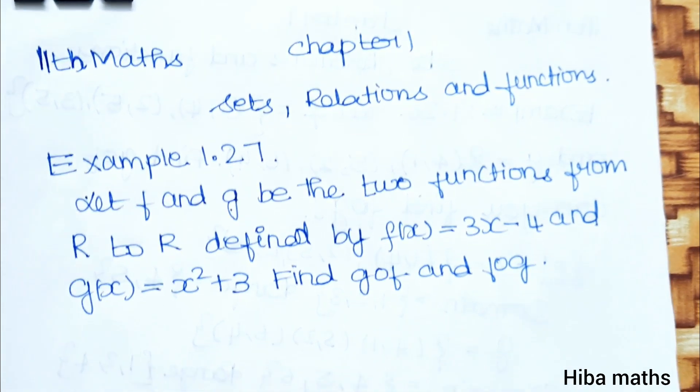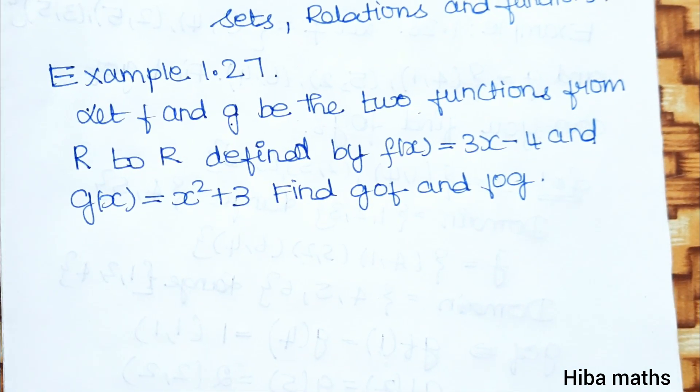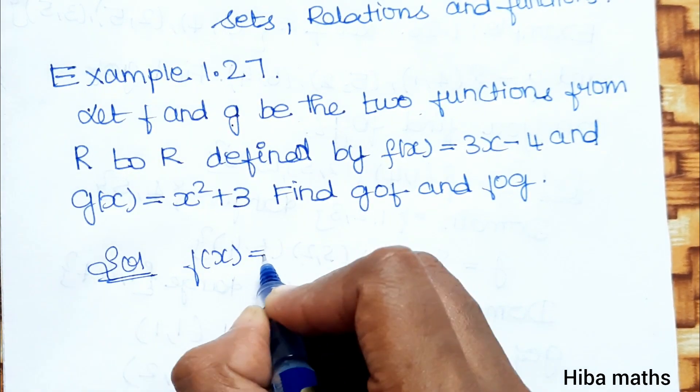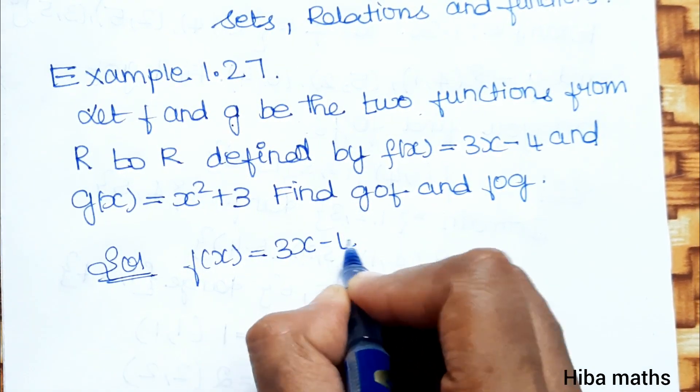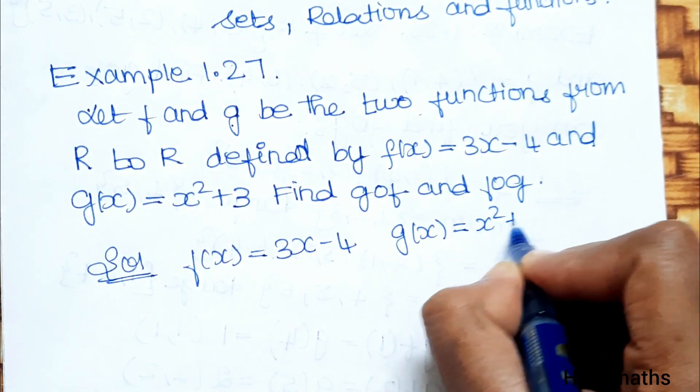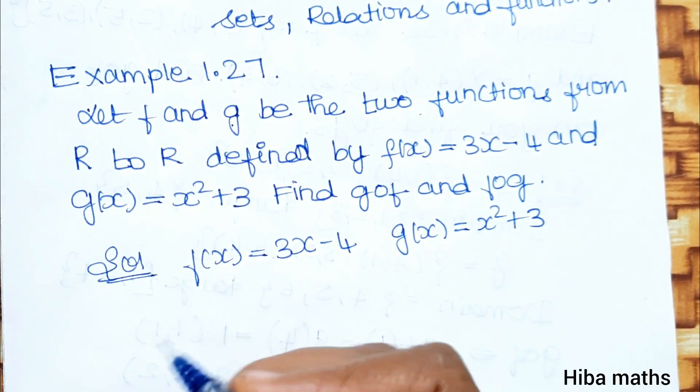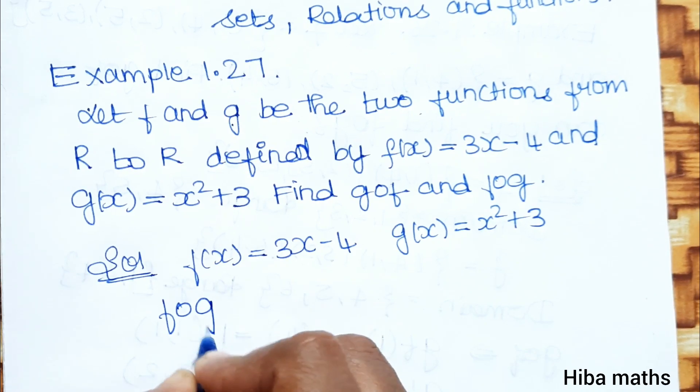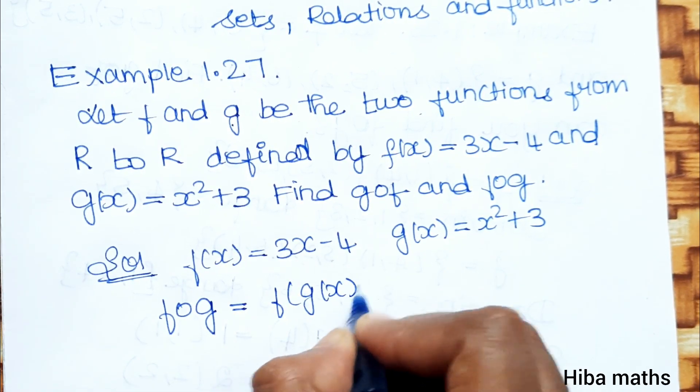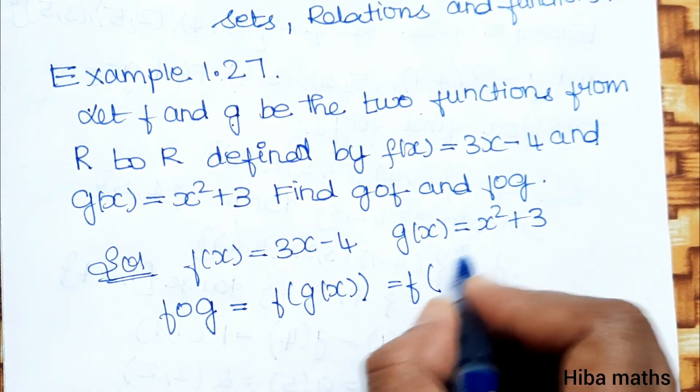So let's solve using the same method. We have f(x) equals 3x minus 4 and g(x) equals x square plus 3. Let's find f of g, which is equal to f of g(x), that is f inside g of x.